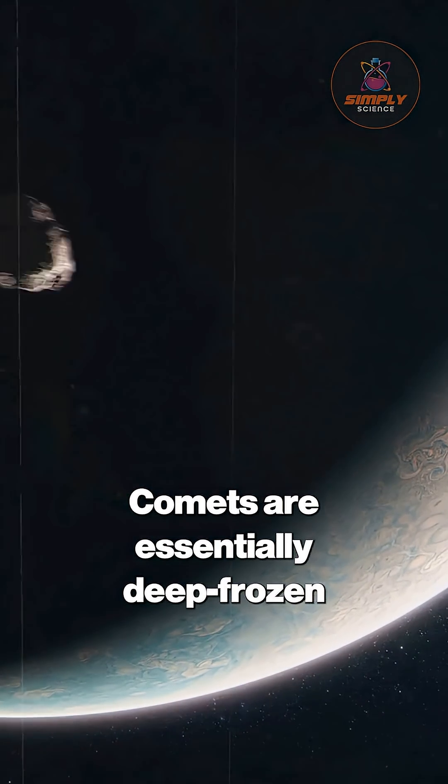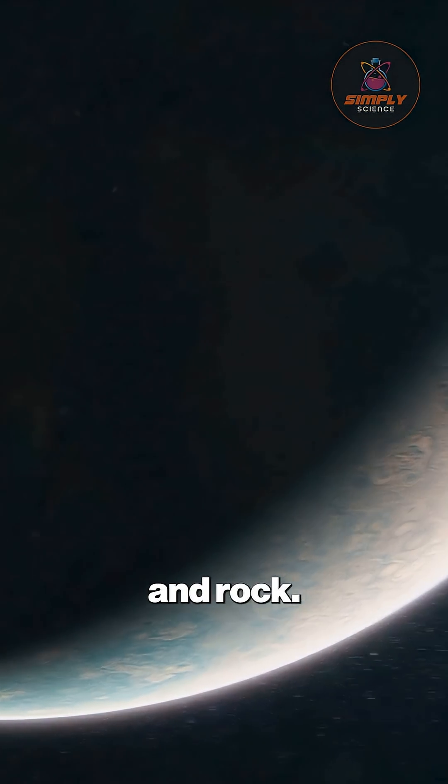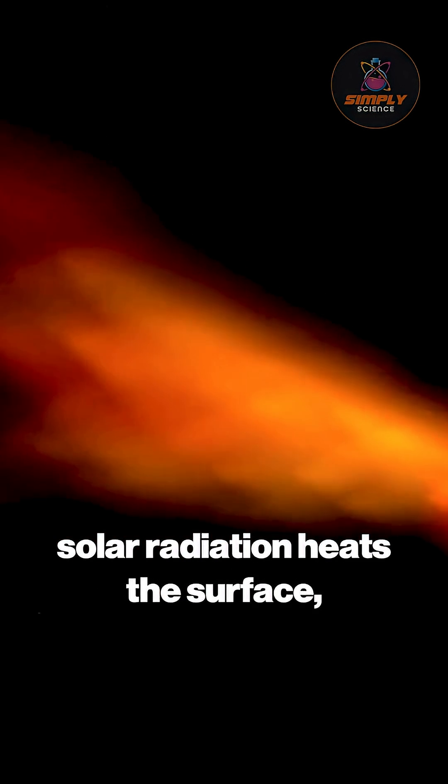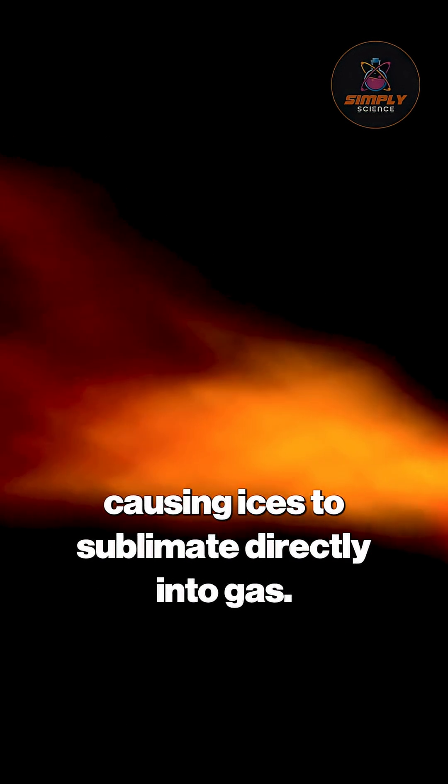Comets are essentially deep frozen reservoirs of ice, dust, and rock. As they approach the sun, solar radiation heats the surface, causing ices to sublimate directly into gas.